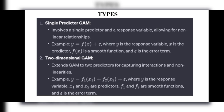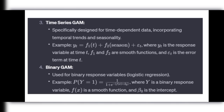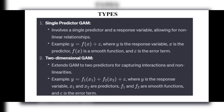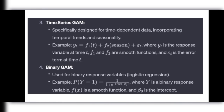The third type is the Time Series GAM, specially designed for time-dependent data incorporating temporal trends and seasonality. The formula is: y(t) = f₁(t) + f₂(season) + ε(t), where y(t) is the response variable at time t, f₁ and f₂ are smooth functions replacing the beta coefficients, and ε(t) is the error term at time point t.